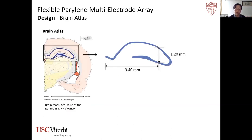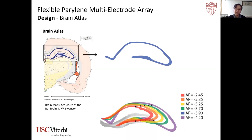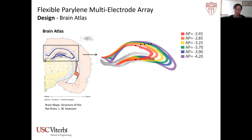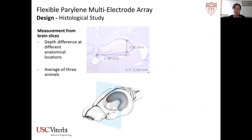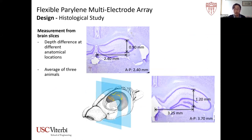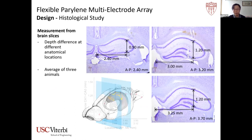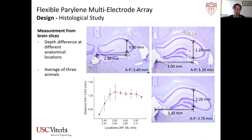To determine the layout of the parylene multi-electrode array, we first measured the depth difference between the CA1 and CA3 cell body layers from the brain atlas. We also measured this distance from brain slices collected at different anterior-to-posterior locations. From those evaluations, we found the depth difference varied from location to location, averaging around 1.1 to 1.2 mm, with CA3 being approximately 1.1 to 1.2 mm deeper than CA1.